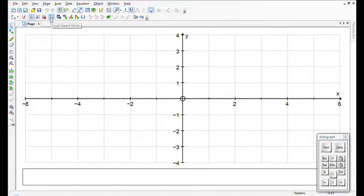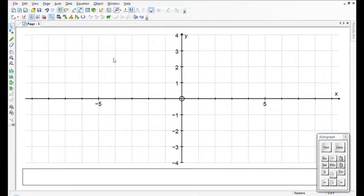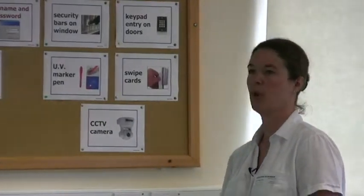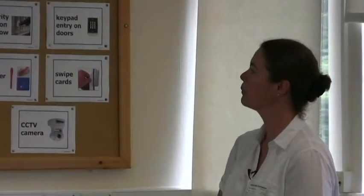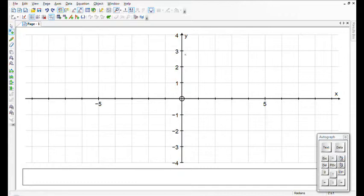Right, so what I'm going to do is just start off. I'm going to put it into equal aspect mode and I think I want a bit better of a scale, I want it a little bit bigger I feel, but I'll do that in a moment. Let's just put a square on somewhere or a triangle, so I'm going to get three coordinates. I'll have one there, one there and one there.